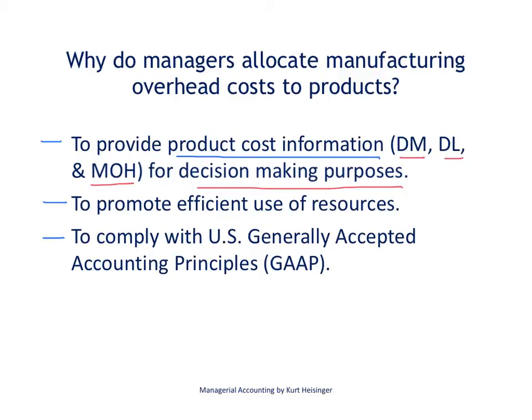Another reason that managers allocate manufacturing overhead costs to products is to promote efficient use of resources — specifically overhead resources such as the factory building and the machinery used to produce particular products. Managers want to see what types of activities are involved in that process, take the cost of those overhead activities, and allocate those costs to products. From that, they can decide whether they are making efficient use of those activities or not.